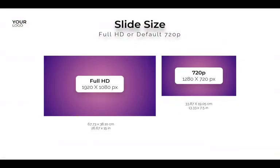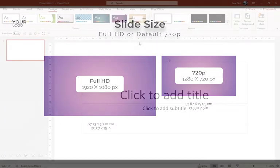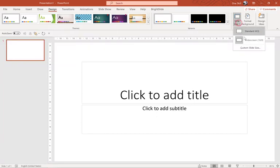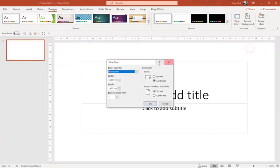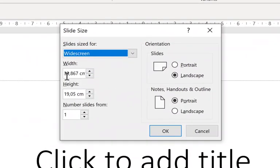Another important setting we have to take care of is the slide size. By default, when you create a fresh blank new presentation, PowerPoint creates slides with 720p resolution. If you would like your template to look extra sharp and nice, you need to set your slides to full HD resolution, and for that you have to increase the size of your slides. We can do that at the same place where we found the aspect ratios — we just have to insert the necessary values for the width and height.